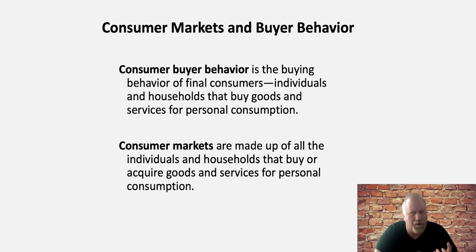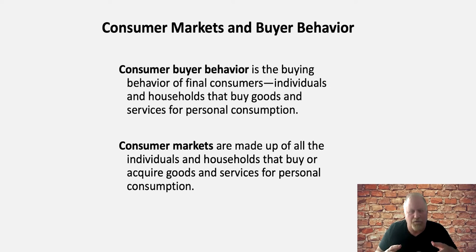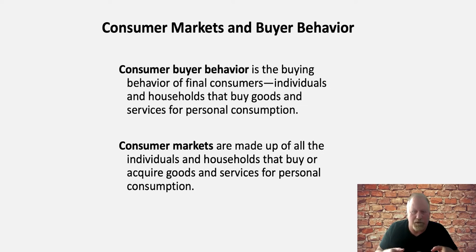When we talk about consumer buying behavior, we look at how this type of individual or household buys. When we talk about consumer markets, they're made up of all the individuals and households that buy or acquire goods for personal consumption within a marketplace for that product or service. Consumer buying behavior looks at individuals and their behavior, while consumer markets aggregate that up across the marketplace.